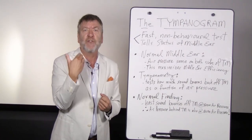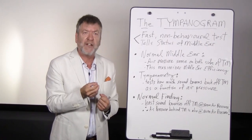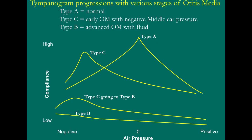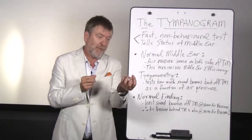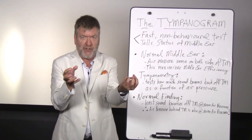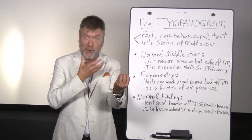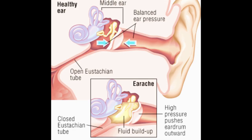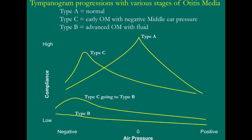When otitis media advances to a fluid-filled middle ear space, it is associated with a type B tympanogram. The type C transitions into a type B: the tympanogram remains over negative air pressure but develops a dull and rounded peak as fluid fills the middle ear. No amount of air pressure change can counteract actual fluid buildup behind the drum, so the type B tympanogram ultimately appears as a flat line, indicating advanced fluid-filled otitis media.